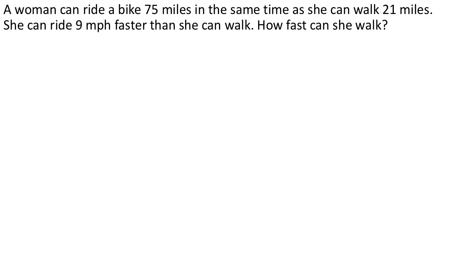In this problem we're told that a woman can do 2 things in the same amount of time. Namely, she can bike 75 miles in the same amount of time that it takes her to walk 21 miles. And then we also know that she can ride her bike 9 miles per hour faster than she can walk. The question is, how fast can she walk?